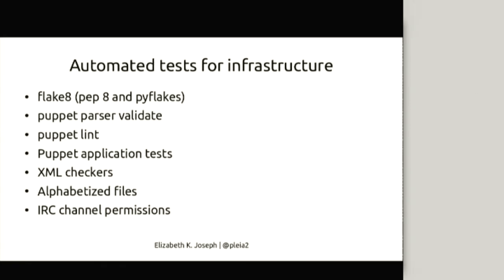People get alphabetization wrong all the time. One of the things that I think is a lot of fun is we also check IRC channel permissions. When we add bots to our infrastructure, we want to make sure we have the right permissions in case something happens, so we can get access to that channel without needing to go through Freenode staff. We have a bot that hops on Freenode and makes sure the infrastructure team is added with the right permissions. So you can't add a bot to your channel until you've satisfied certain criteria.